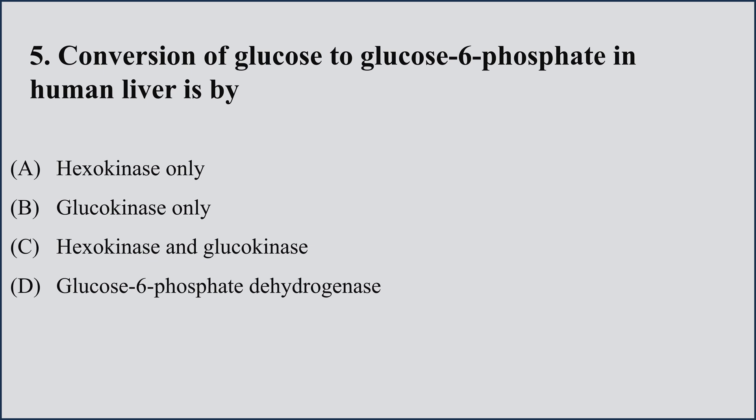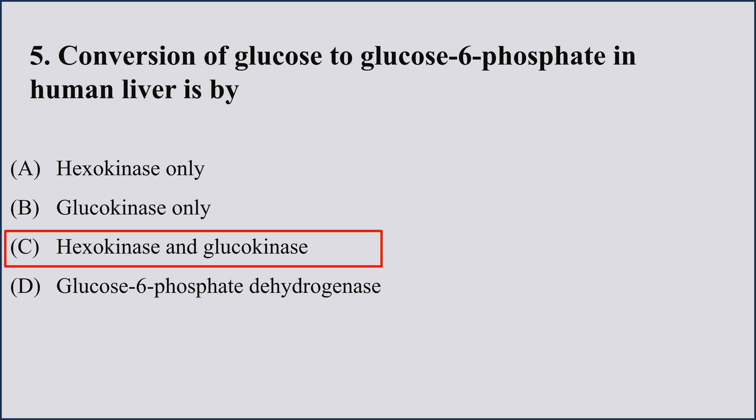Glucose gets phosphorylated with the help of ATP; ATP is converted into ADP and glucose becomes glucose-6-phosphate. This reaction is catalyzed by the enzymes glucokinase and hexokinase — either one may act. Glucokinase, as the name indicates, acts specifically on glucose, while hexokinase acts on all hexoses.